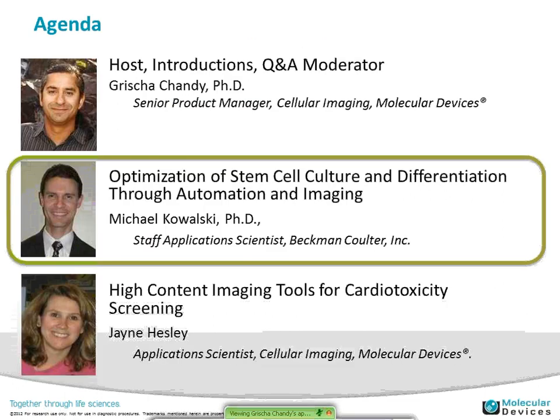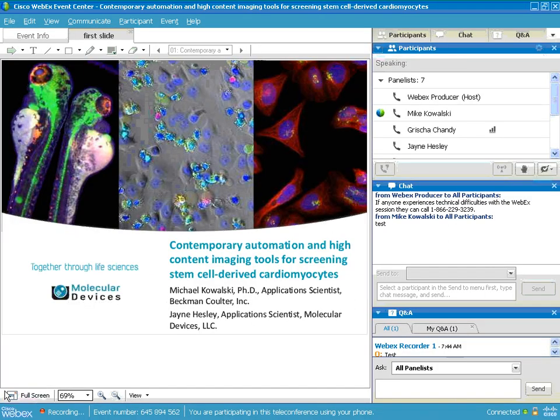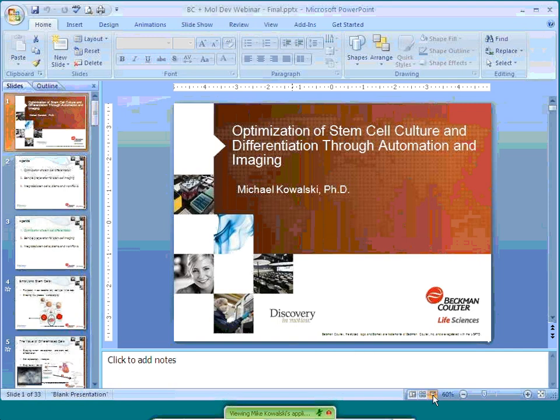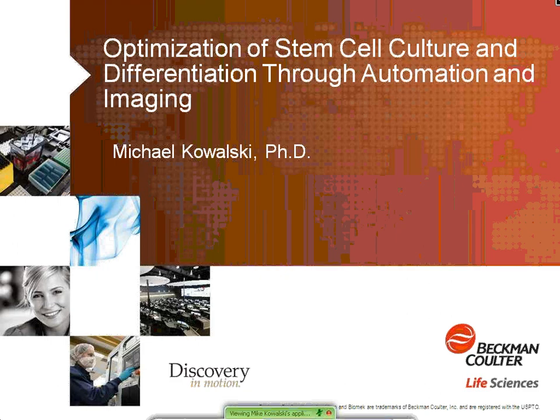There are a variety of ways to get stem cells: adult stem cells, embryonic stem cells, iPSC stem cells, and cancer stem cells. We'll talk about a couple of examples and how you might derive them. There are vendors on the market that provide these stem cells, and Beckman will show us how to make better stem cells if you want to do it yourself. At that point, I'd like to turn this over to Mike, who will talk about optimization of stem cell culture and differentiation through automation and imaging.